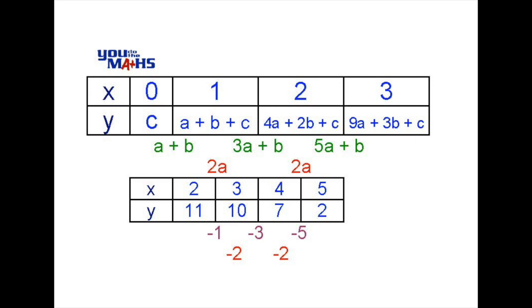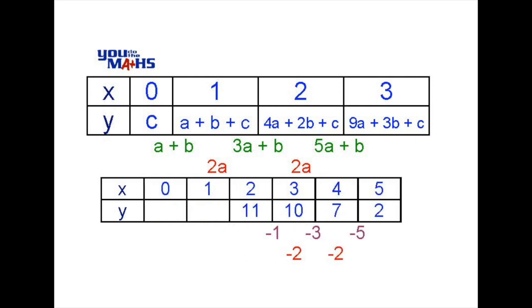What we want to do now is extend our original table back to the left to x equals 0 and compare them with the algebraic expressions in the table at the top of the screen. In the table below we've extended the x values to the left, being 1 and 0. Notice the second difference will be constant — negative 2 all the way through. Now have a look at the first differences. From right to left it goes negative 5, negative 3, negative 1. It's increasing by 2 as we move to the left, so the values of 1 and 3 will be the first differences as we move right to left.